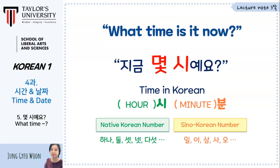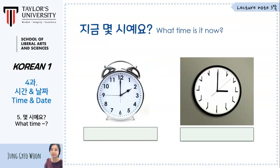Now we have some practice in the lecture notes. You can open page number 3. The first example shows number 2, 2 o'clock. For the hour, we must use native Korean numbers. There is also an irregular form for numbers 1, 2, 3, 4, and 20 in native Korean when followed by a unit noun. The time expressions 시 and 분 are considered unit nouns, so we use the shorter form. 2 o'clock will be 두 시예요.